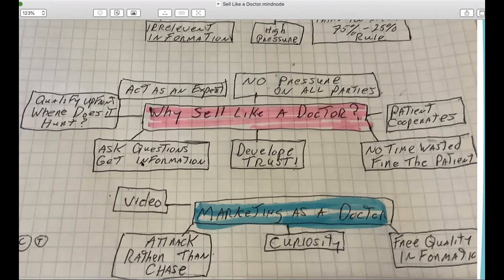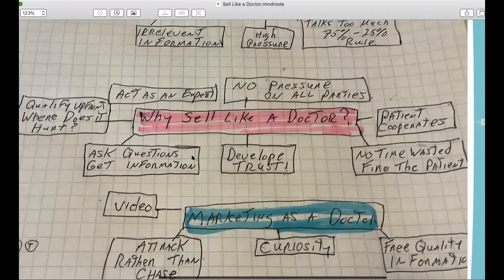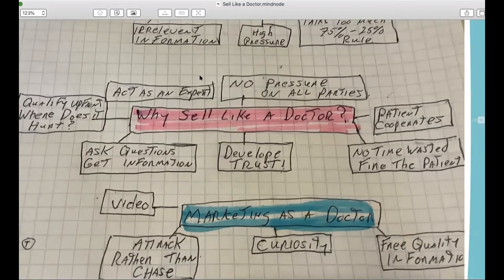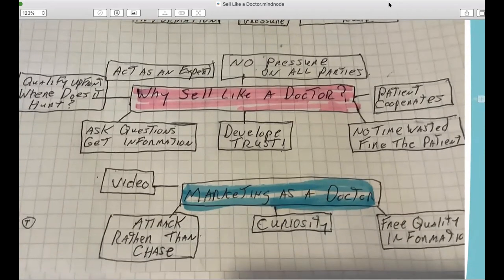Qualification. So we ask questions, we get information. We act as an expert upfront without the irrelevant information presentation. We just go right in. We let the prospect become the salesperson. We let them give us the information we need. The prospect can tell us what's wrong, what they want to do about it, and how much money they, do they have the money or the budget for it?